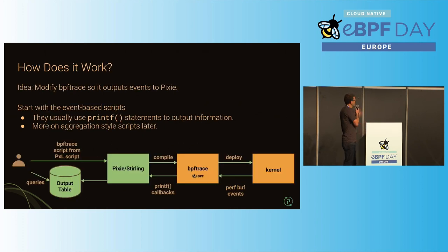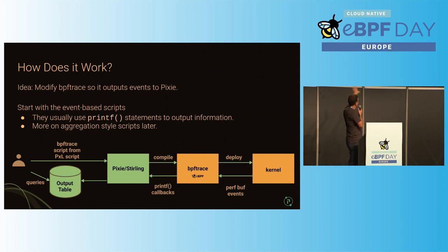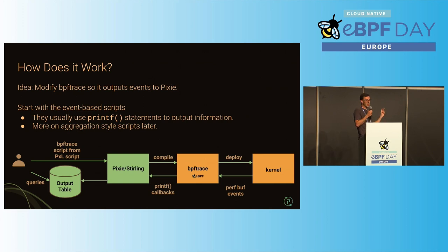The idea was to slightly modify BPF Trace so that instead of outputting events to the screen — which is what it normally does with printf — those events get sent to tables within Pixie so we can query them. We focused on BPF Trace scripts that primarily output things based on printf. The user sends in a BPF Trace script; we send it to BPF Trace to compile it and deploy it to the kernel. As events come back from the kernel, we intercept the printf callbacks so they never go to standard out — they come back to Pixie in a structured format. The data is pulled back into Pixie, put in output tables, and made available for querying.